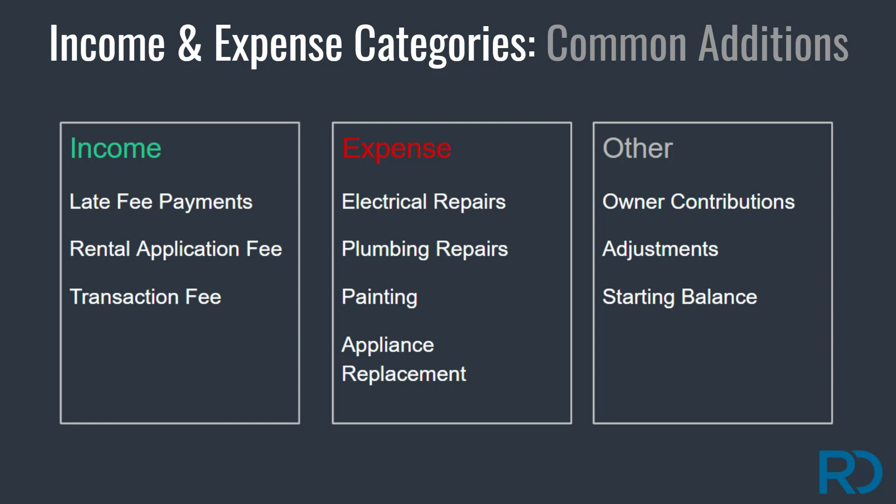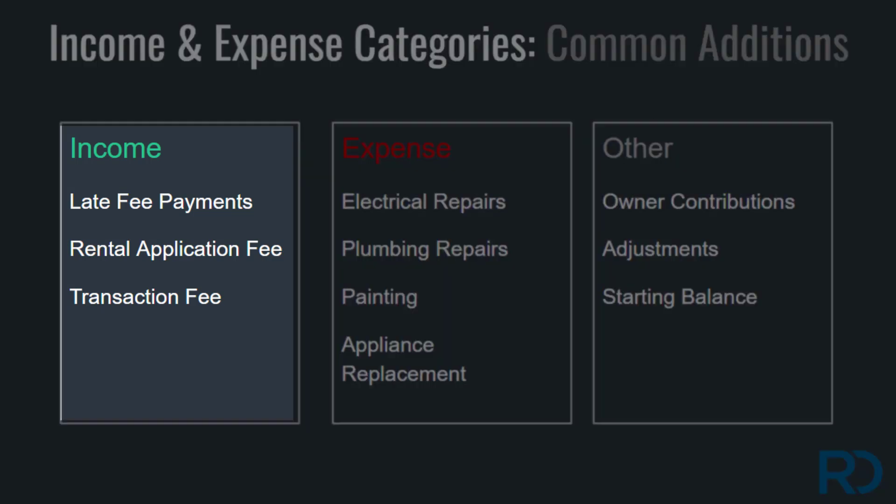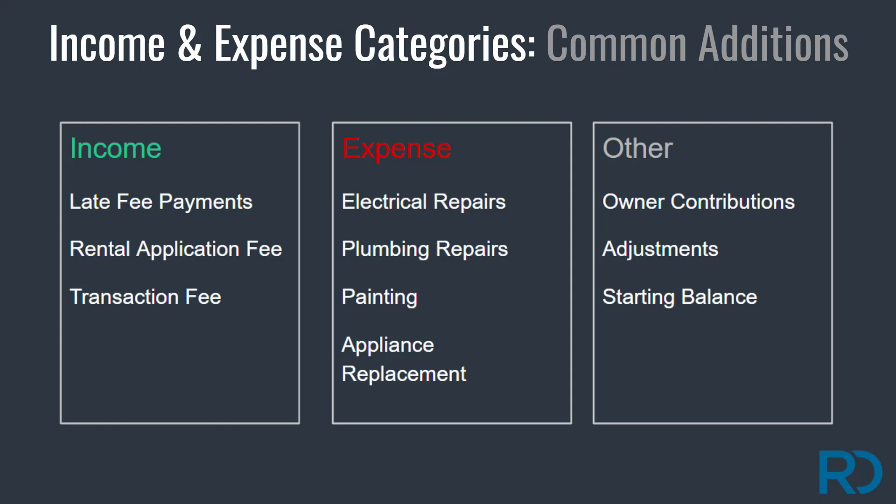Additional categories will assist you in tracking your transactions in more detail. For example, adding a separate income category for online payment transaction fees will allow you to link it into your online payment settings. Keep in mind, new transaction categories can be added at any time under your settings.